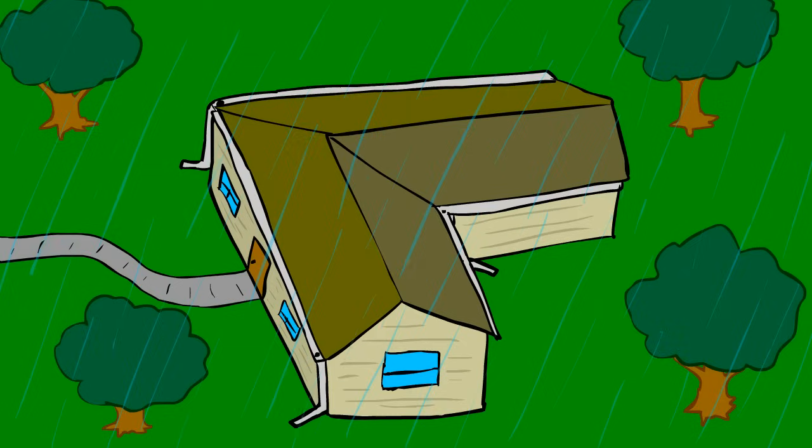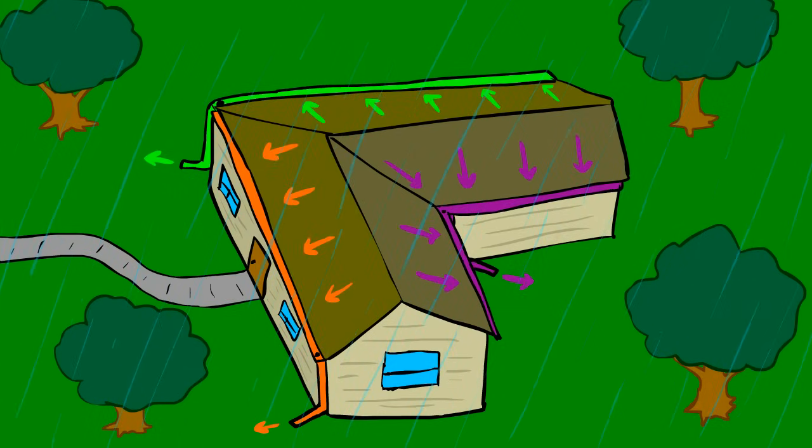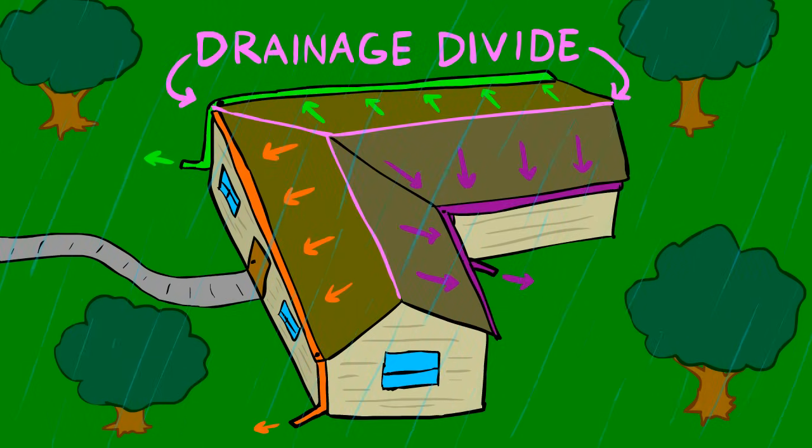To visualize it better, let's take a look at this roof and its gutters. The rain that falls on each side ends up draining into its own gutter. The drainage divide is marked by the peaks of the roof, and each section could be considered a watershed.